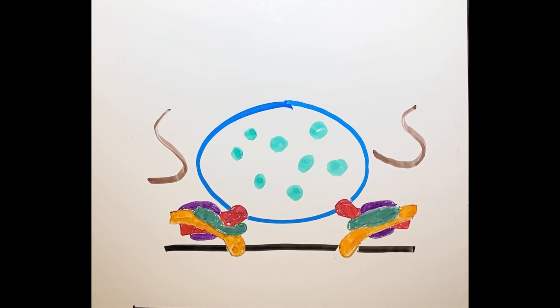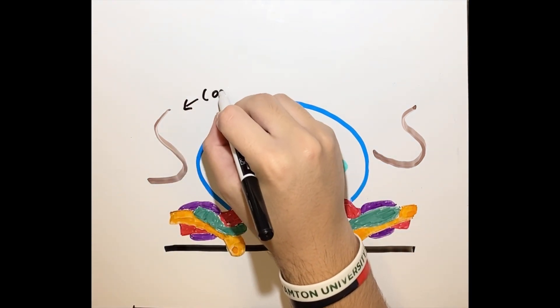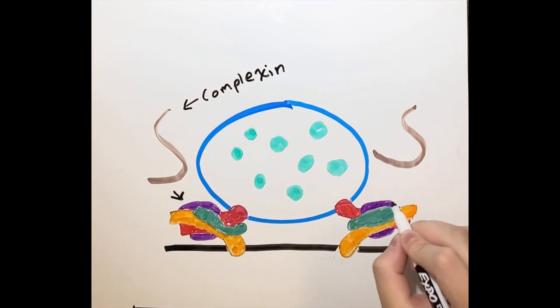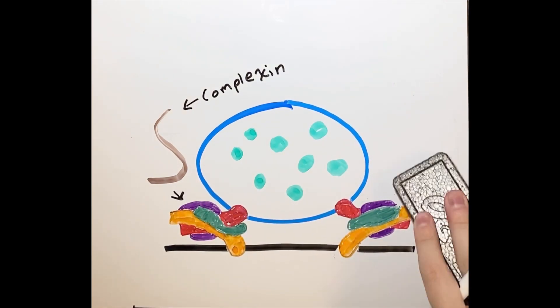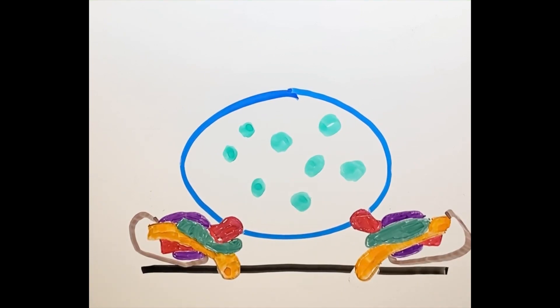Before the SNARE complex is finished, it needs another protein which is not part of either membrane to be attached. This protein is called complexin, which is needed to bind before the SNARE complex can be seen as complete. The complexin not only helps to facilitate the SNARE complex's completion, it also causes a process called superbinding, which is when the two membranes are pulled extremely close together.